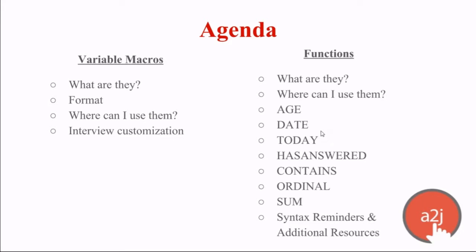On our agenda today, first we'll cover variable macros: what are they, the format for using them, where you can use them in an A to J guided interview, and how you can customize your interview using macros. The second part will cover functions: what are they, where can you use them. Specifically we'll focus on age, date, today, has answered, contains, ordinal, and sum. Then we'll go over syntax reminders and additional resources, because I'm not covering all the functions that exist in A to J Author. At the end I'll show you where to find all functions in our A to J authoring guide, with explanations of what each function does and how to use it.